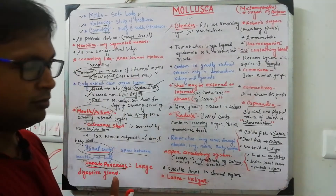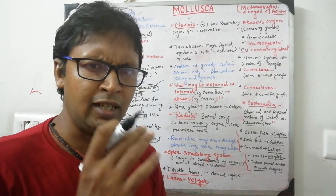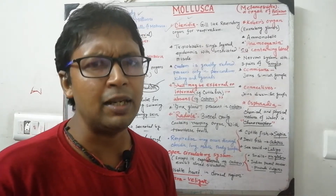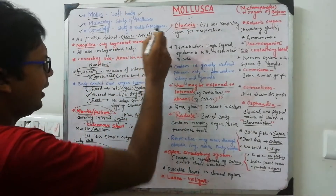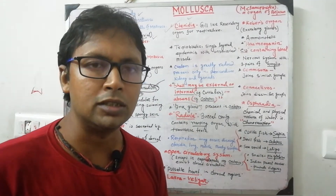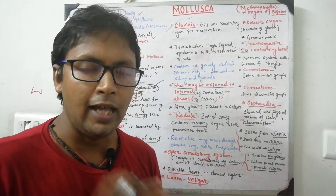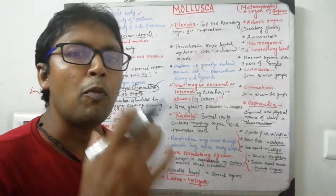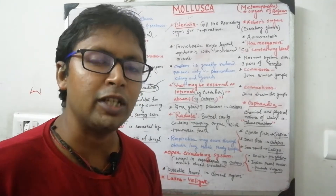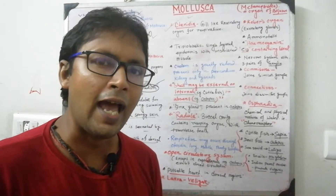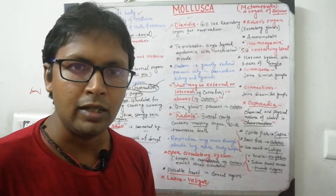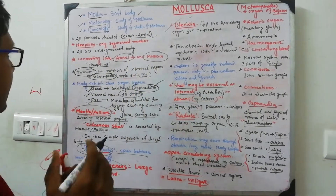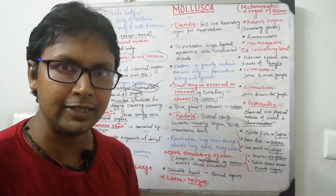Members of Phylum Mollusca occupy all possible habitats — freshwater, marine, and terrestrial — but no aerial members exist. Their body is unsegmented; the visceral mass is unsegmented, and they possess unstriated muscles. The only exception is Neopilina, a genus with a segmented body, which serves as a connecting link between Annelida and Mollusca.